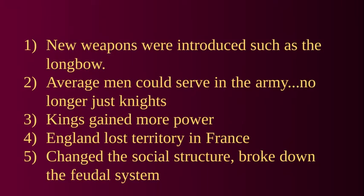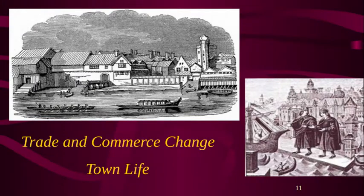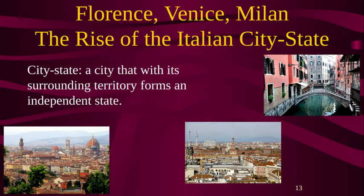We can see the trade difference in town life — where the importance lies. There's a shift from church versus government, religious versus secular. We see the development of cities and the rise of city-states — a city with its surrounding territory that forms an independent state, basically a city that is its own country. A city-state is very powerful; it has influence around it, and the city is the capital of the surrounding area.